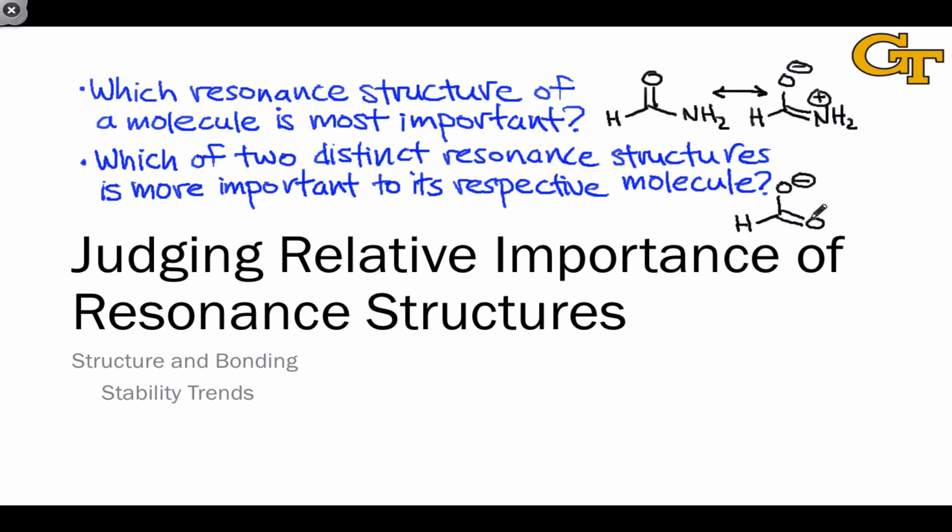We could look at a resonance structure in which formic acid has a negative charge on one of its oxygens and a positive charge on the other. Compare this with the dipolar structure of the formamide molecule, and you'll see that an interesting question here is: which of these two is more important to its respective molecule? The structure of formic acid, in which we have two opposing charges, or the structure of formamide, in which those two corresponding charges also exist?